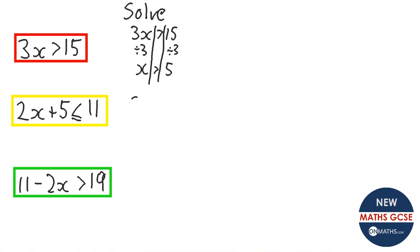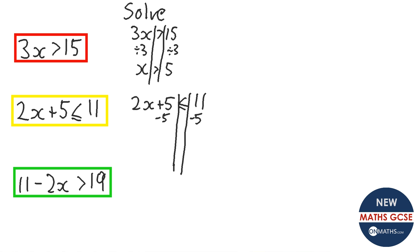The next question is 2x + 5 ≤ 11. Same process — draw the lines. First, get rid of the plus 5 by subtracting 5 from both sides, leaving 2x ≤ 6. Then divide both sides by 2. So x ≤ 3.